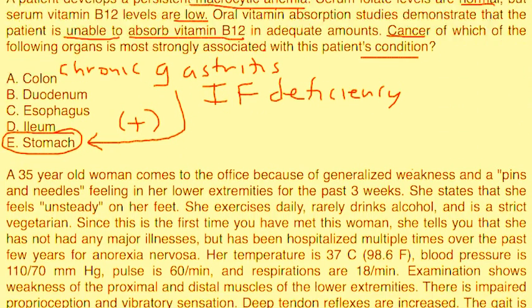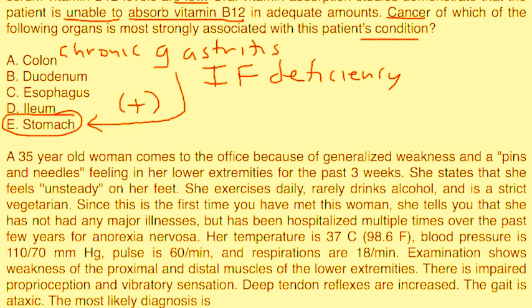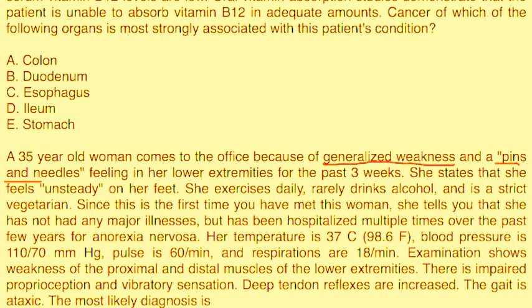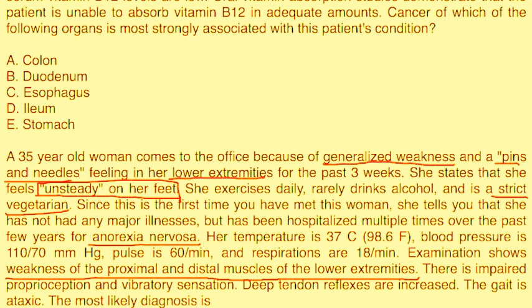Finally, the last one. A 35-year-old woman comes to the office because of generalized weakness and pins and needles feeling in her lower extremities for the past three weeks. She states that she feels unsteady on her feet. She exercises daily, rarely drinks alcohol, and is a strict vegetarian. This is the first time you have met this woman. She tells you that she has not had any major illnesses, but has been hospitalized multiple times over the past years for anorexia nervosa. Temperature is 96, blood pressure is 110 over 70, pulse is 60, respirations are 18. Examination shows weakness of the proximal and distal muscles of the lower extremities. There is impaired proprioception and vibratory sensation. Deep tendon reflexes are increased and the gait is ataxic.